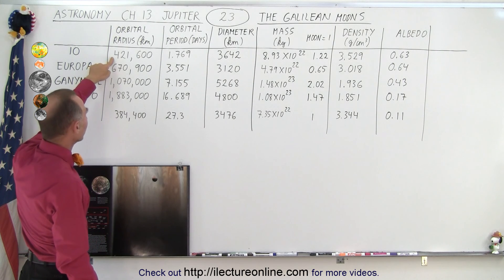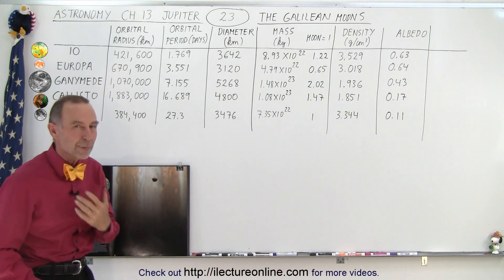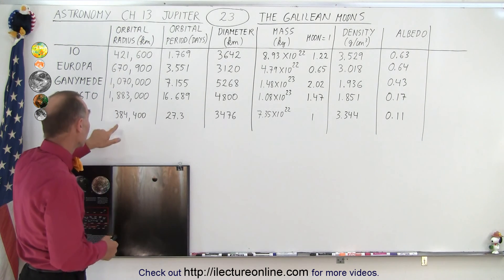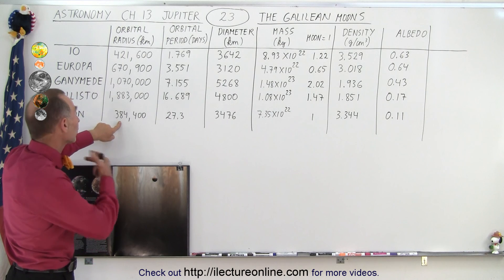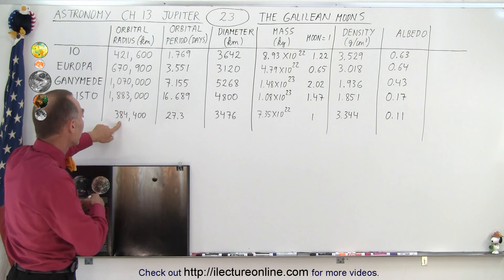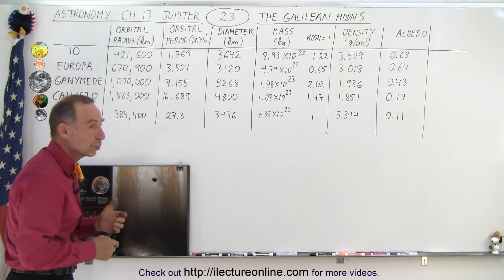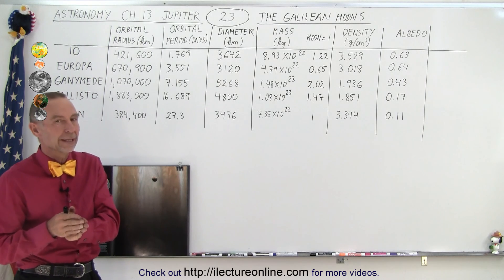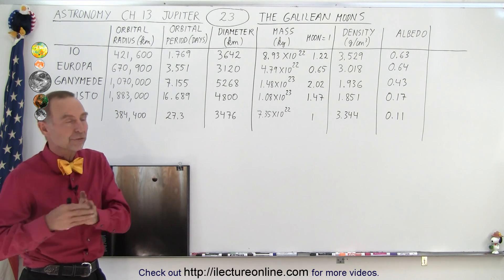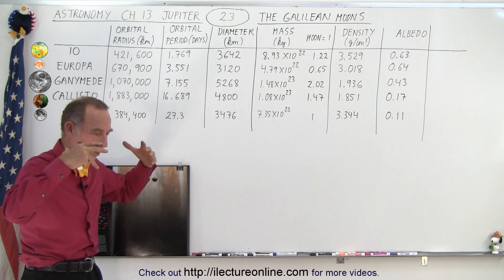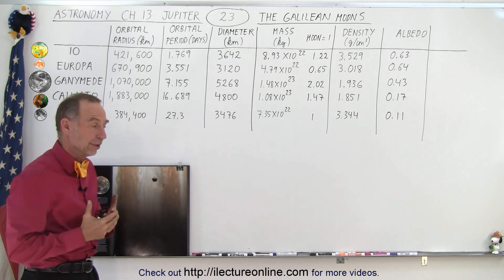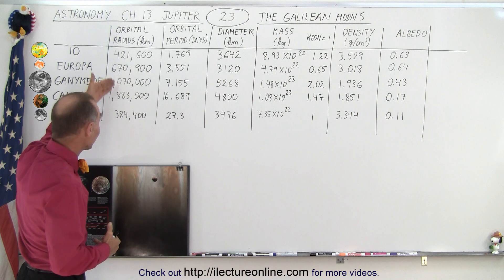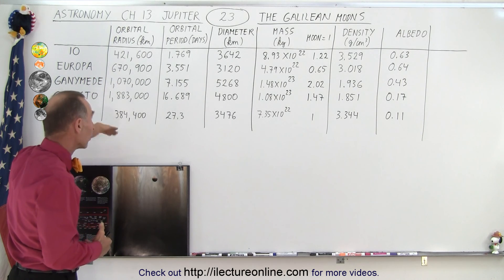The distances vary from a little bit over 400,000 kilometers to almost 2 million kilometers. Compared to the moon and the Earth, the moon is only 384,000 kilometers away from the Earth, so the four Galilean moons are farther away from Jupiter than the moon is from the Earth. However, since Jupiter is such a much bigger planet than the Earth, these four moons are relatively close to the planet.